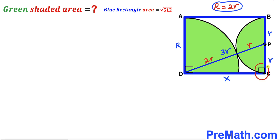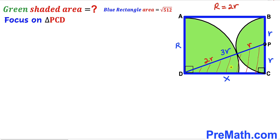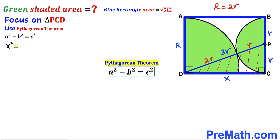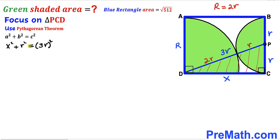Keep in mind that this angle is 90 degrees since we are dealing with a rectangle. We are going to focus on right triangle PCD and apply the Pythagorean theorem. Our formula is a² + b² = c², where the hypotenuse is 3r and the two legs are lowercase r and x. Filling in the blanks: x² + r² = (3r)².